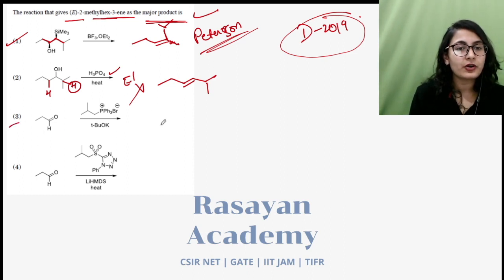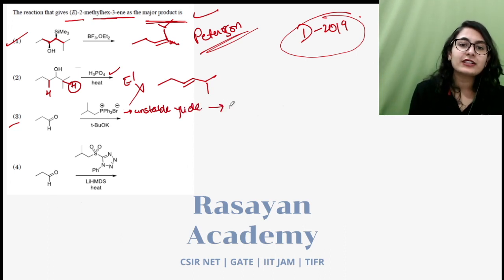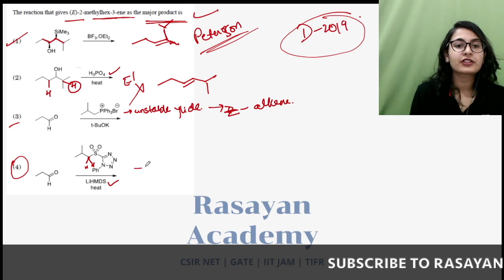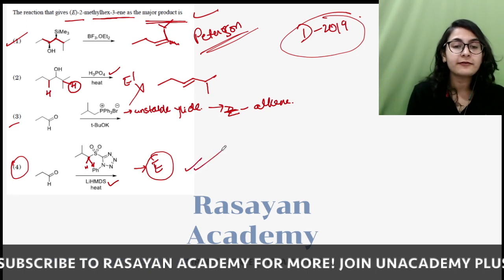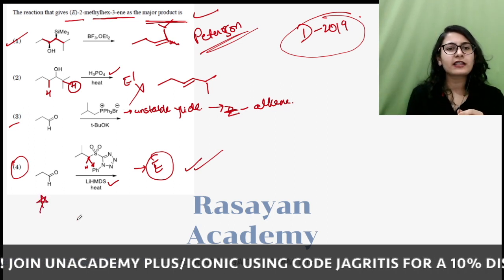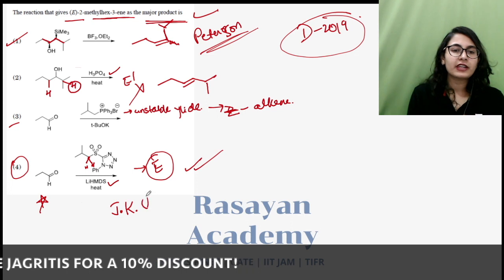Option 3 is a Wittig reaction with an unstabilized ylide — an ylide that does not have an electron-withdrawing group to stabilize it. This will lead to a Z-alkene, absolutely not E. Option 4 has the tetrazole molecule with two alpha hydrogens and LiHMDS — this is absolutely Julia-Kocienski Olefination. Without any doubt, you can write it is going to give you the E-alkene. This is the correct answer for the December 2019 question.